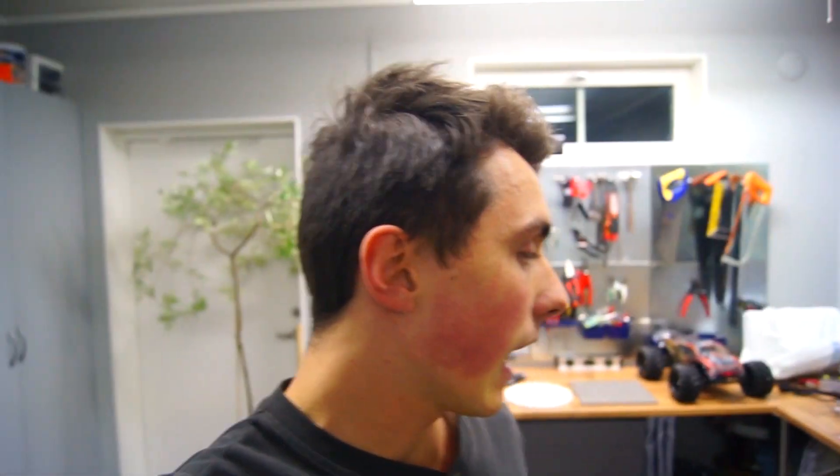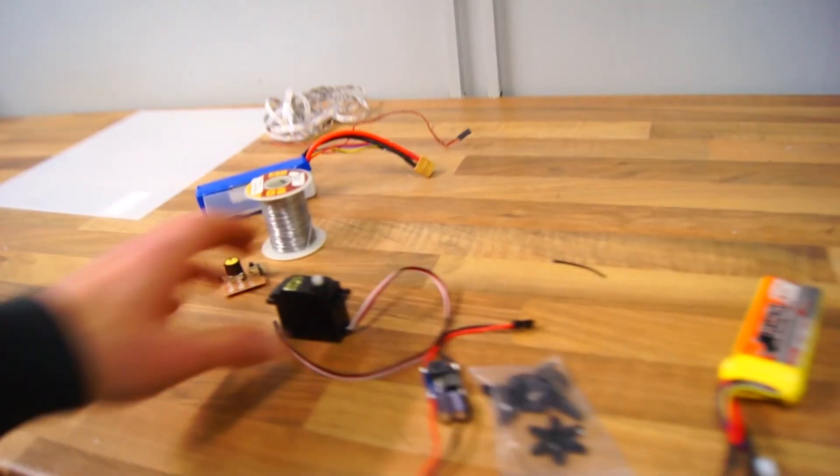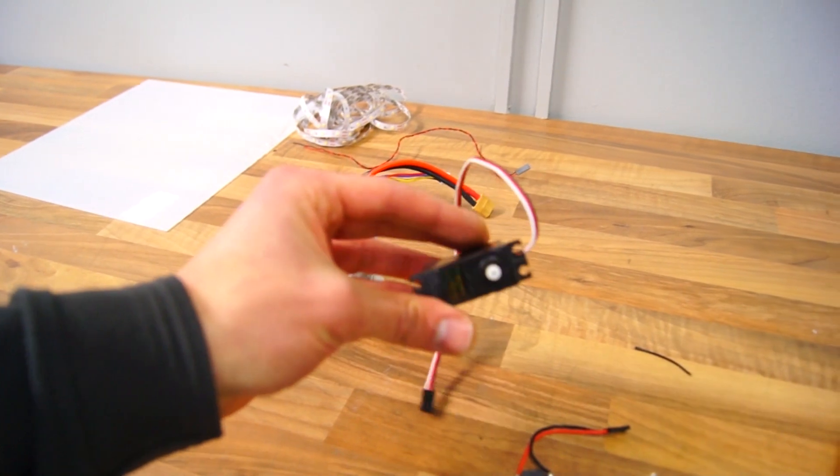You can find all these components on eBay. I will leave links in the description below, take a look there. The first step is to make the servo continuously rotating.